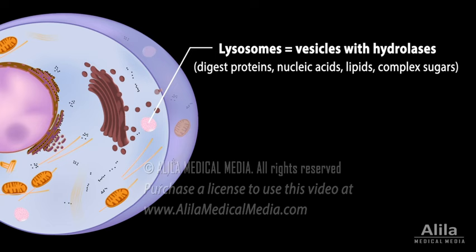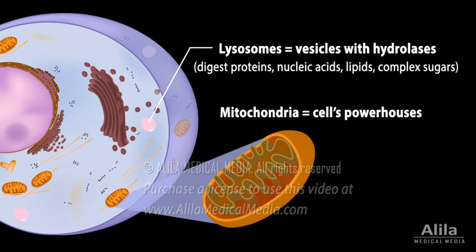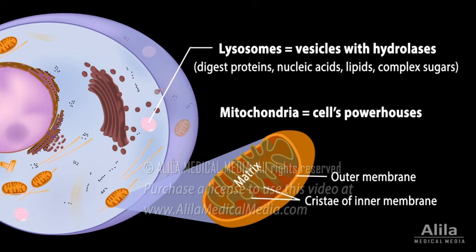Mitochondria are best known as the cell's powerhouses — where energy is extracted from food compounds and stored in energy-rich molecules. A mitochondrion has two membranes; the inner membrane has multiple folds called cristae. Two of the three main steps of cellular respiration occur in the mitochondria: the citric acid cycle in the matrix, and oxidative phosphorylation on the cristae.